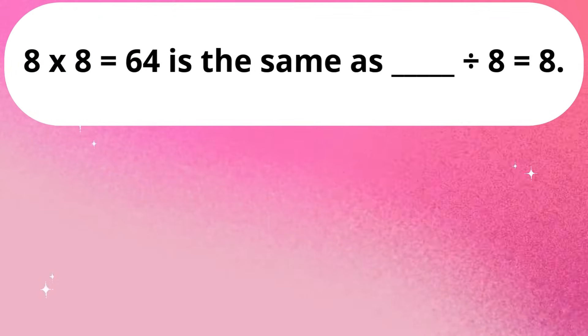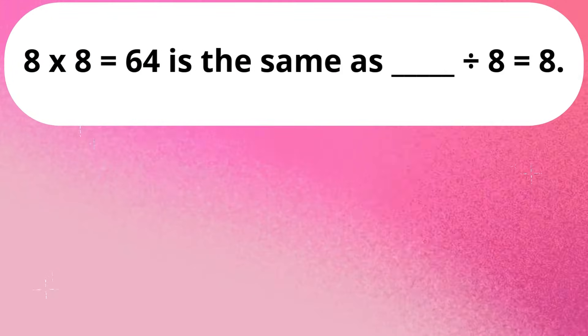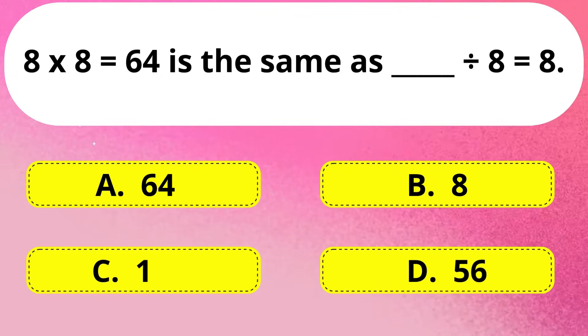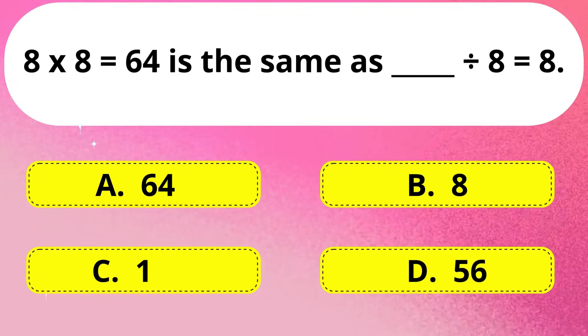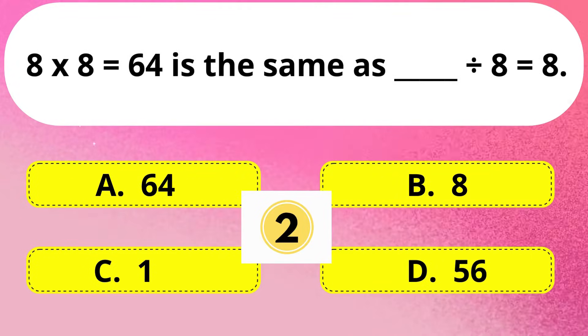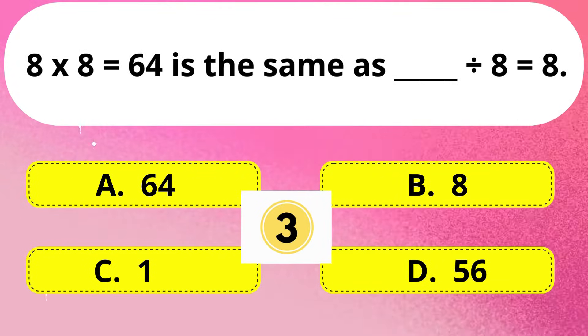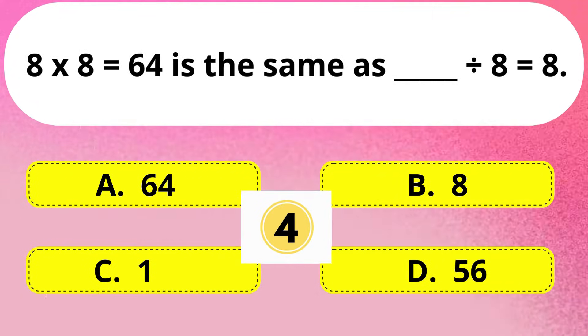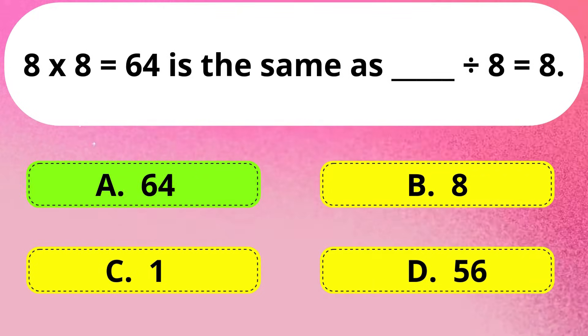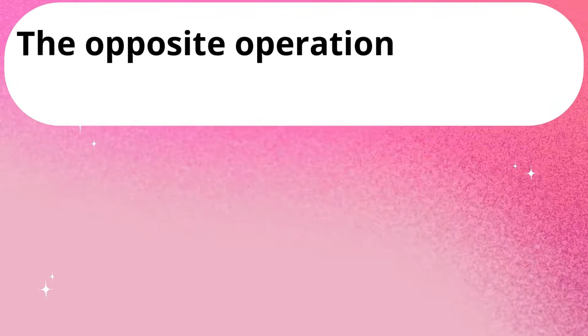Next question. 8 x 8 is equal to 64, which is the same as dash divided by 8 is equal to 8. The right answer is Option A: 64.